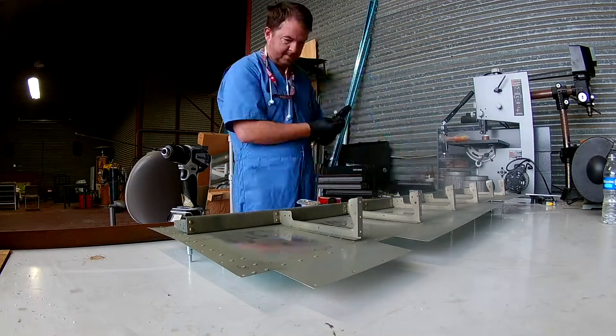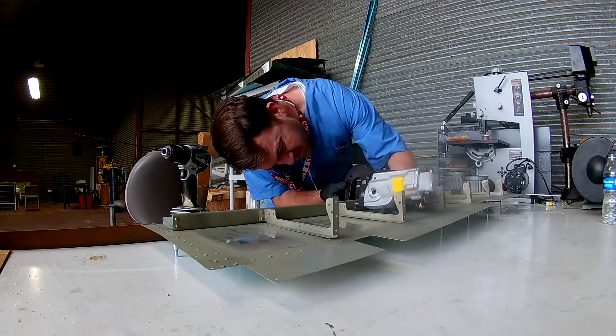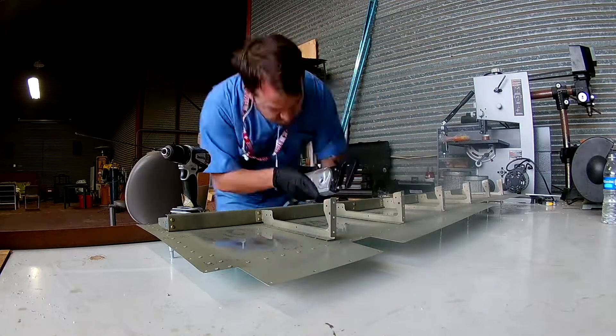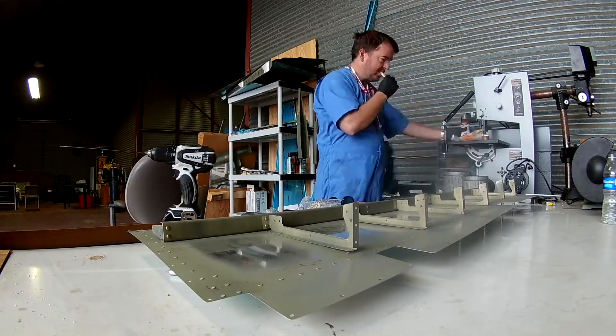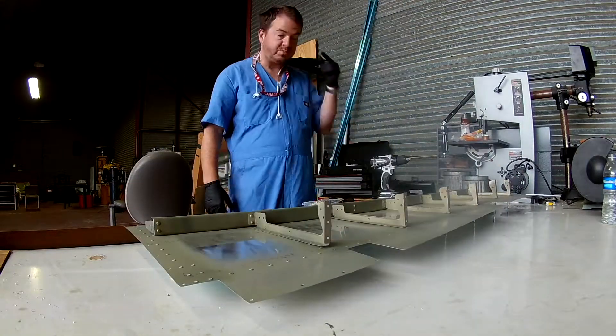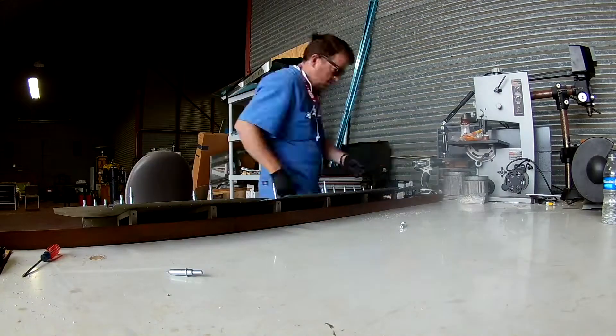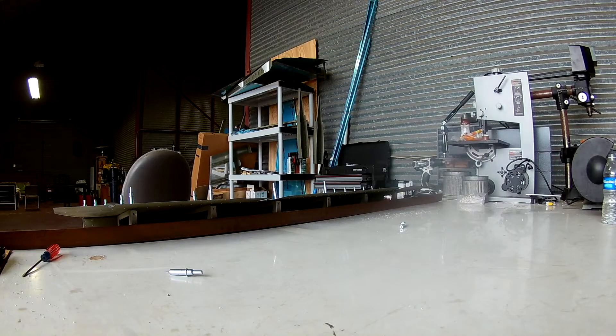So here we are continuing to bond the rear spar rib attachments to the skins. After having just gone through all that humble pie, it's time to get things back on track.